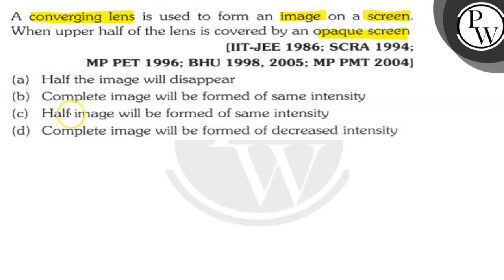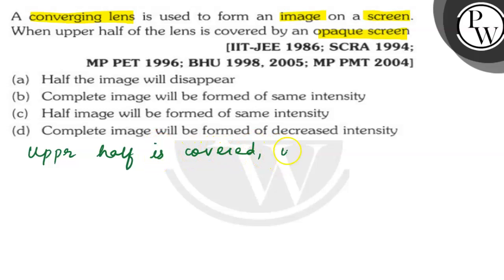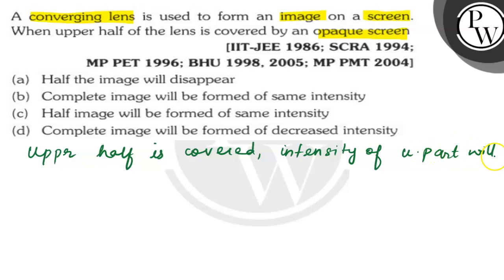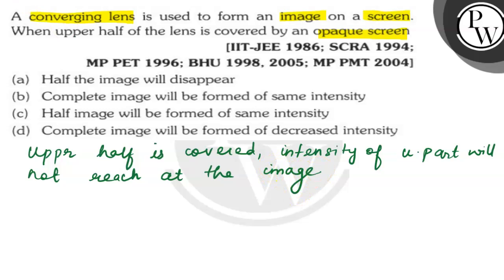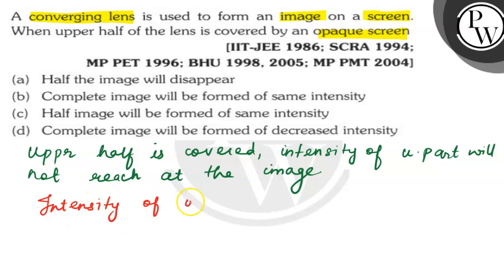If we say that the upper half is covered, then the intensity from the upper half will not reach the image. So what can we say? It will not reach the image. So the intensity of the image will decrease.